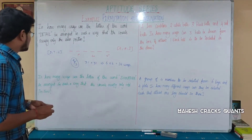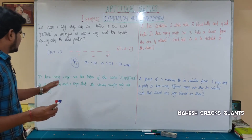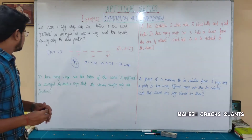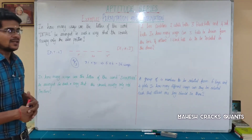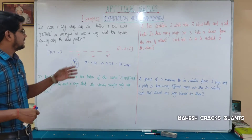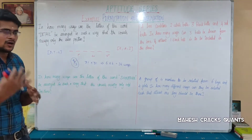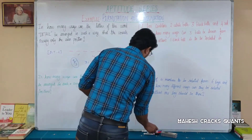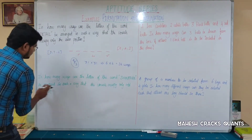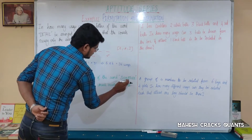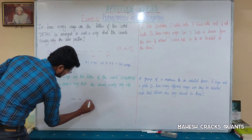The next question: in how many ways can the letters of the word SIGNATURE be arranged such that the vowels occupy only the odd positions? The only difference from the previous question is vowels occupy odd positions instead of even. How many letters are there? There are nine letters, so nine spaces.